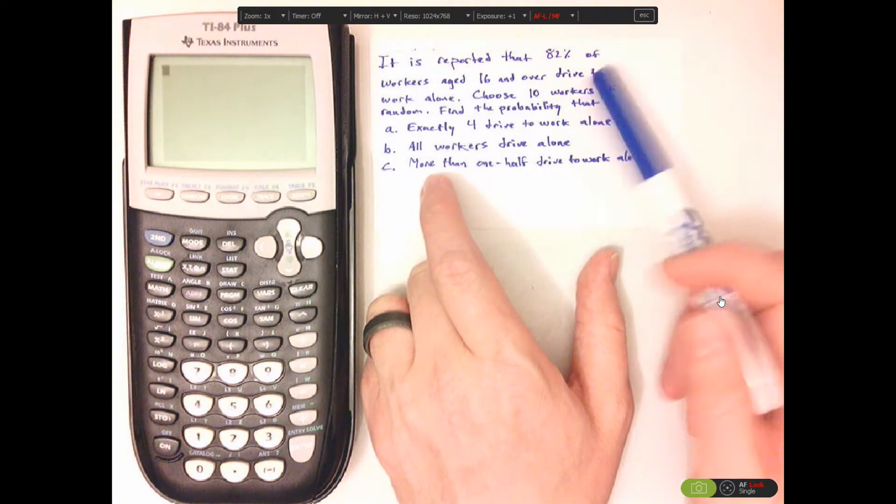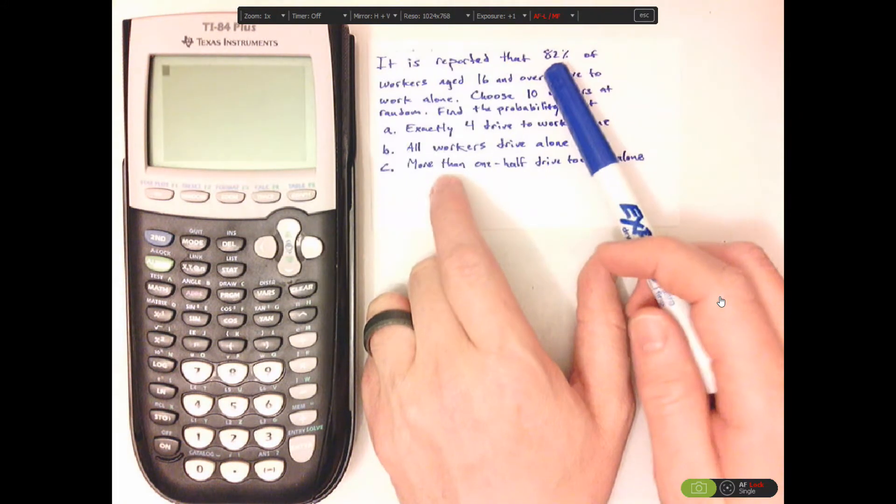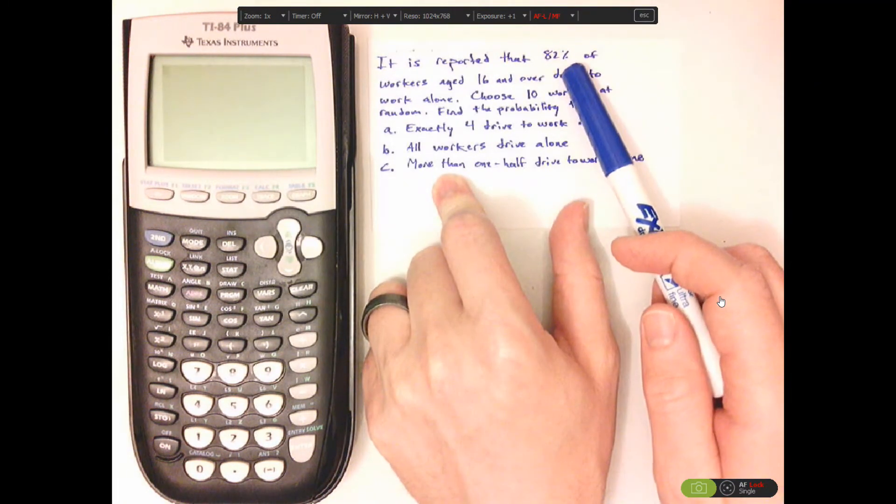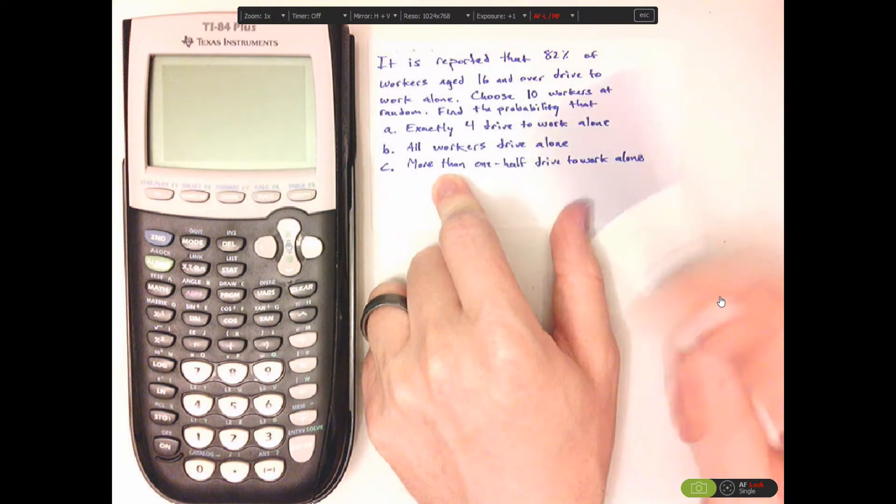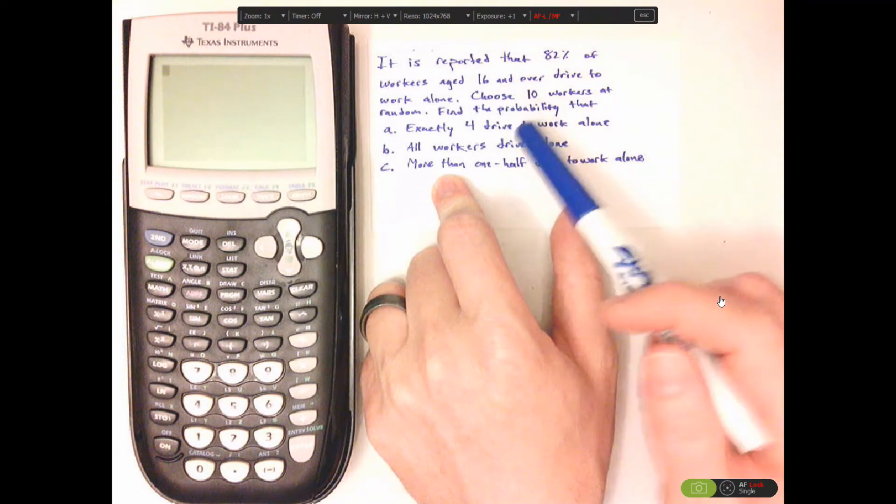I know it's a binomial distribution because they just give me one percentage and it's just two outcomes and you'll see that when I read it and the trials are fixed.